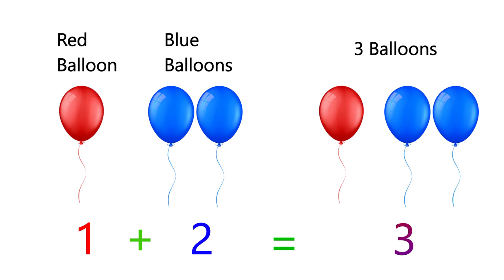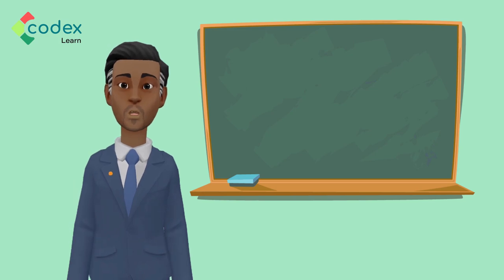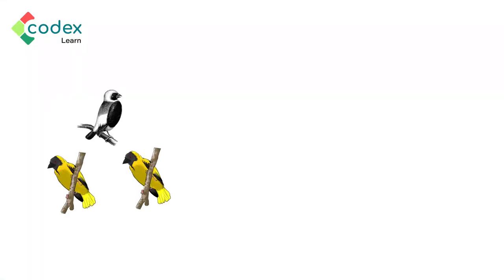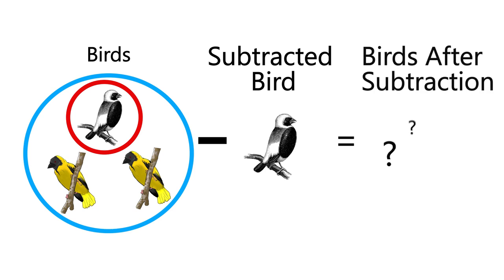Now let us look at another example. What do we have here? If you said birds, you are correct. We all love birds in the sky. And how many birds do we see here? One, two, and three. If I take away one bird from these three birds, how many birds would we have left?